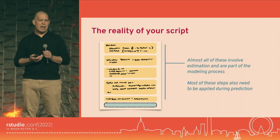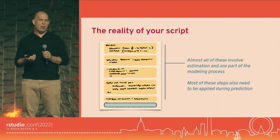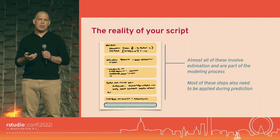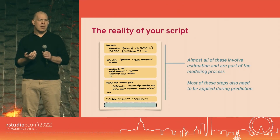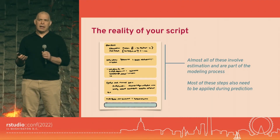When we go to predict new data, we have to apply all those same transformations to data we might get six months from now. A good chunk of that script has to carry over to your prediction script and you have to keep using it. It's a bit of a mess — and as somebody who did this for a living, this is a great problem to solve.